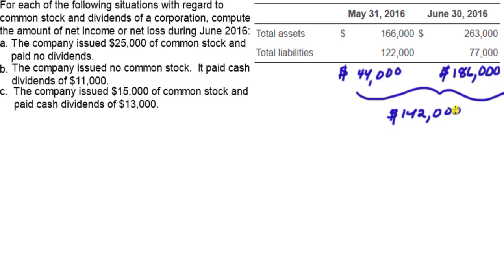Stockholders' equity has only two sections: common stock and retained earnings. Common stock means external contributors put in cash in exchange for ownership shares. Retained earnings is the net equity created from operations — revenue generated minus expenses. So this $142,000 equity increase during June must be explained by those two categories. Let's break that down for each situation.